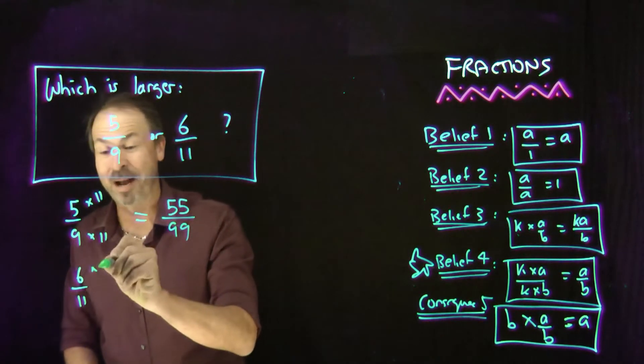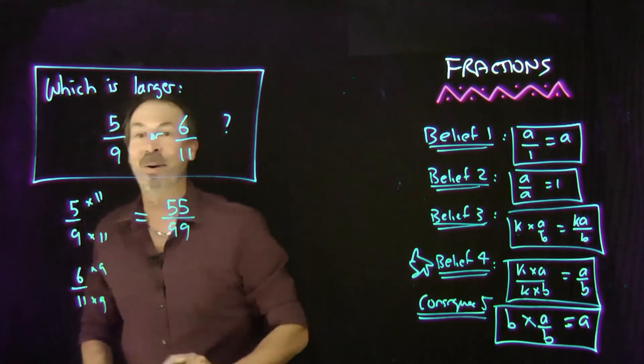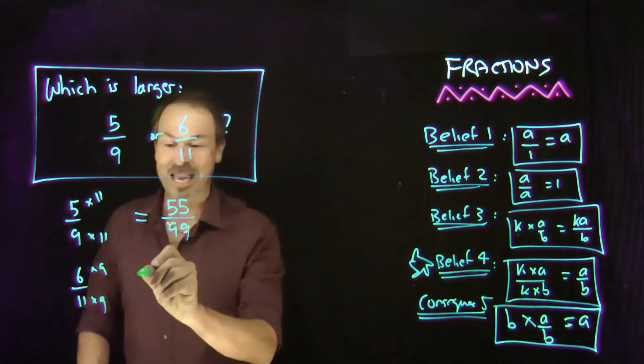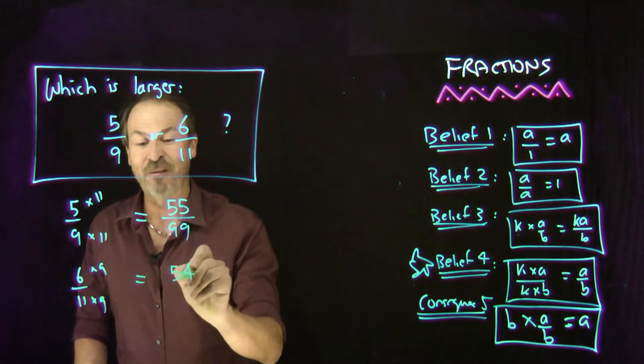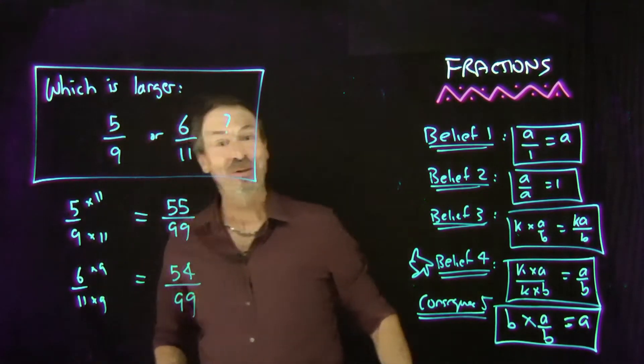I'll scale the number of pies up by 9 and the number of students up by 9. Now you can see what I was doing, I bet, because that says, oh, that's the same as having 54 pies to be shared amongst 99 students again.